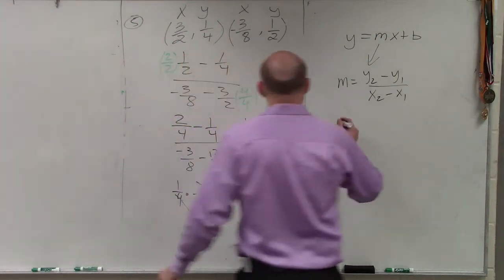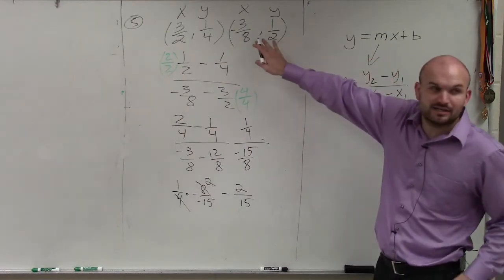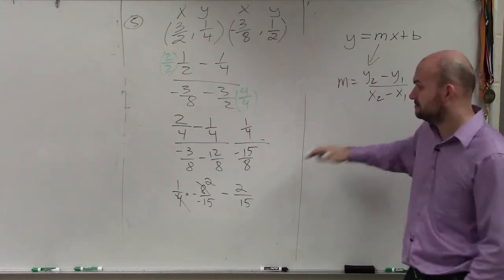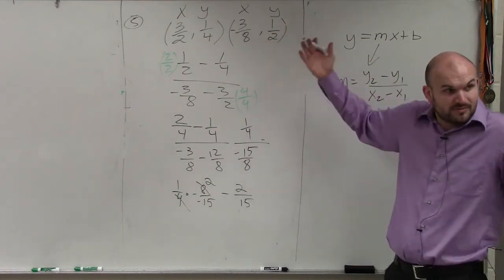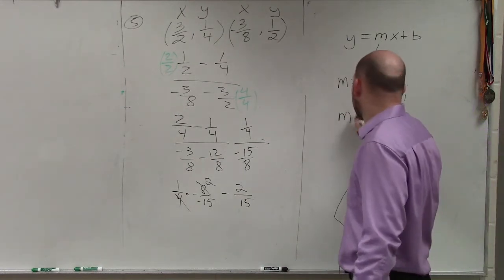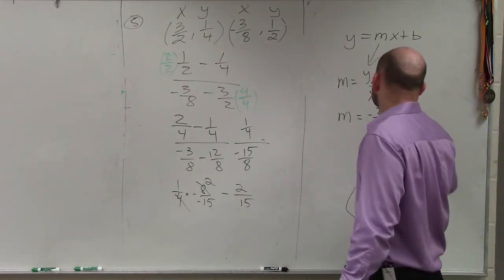Now I know what my slope is. And I need to determine, I need to use one of these points. Right? Remember before, once we knew the slope, I know what the slope is, m equals negative 2 fifteenths. Right?